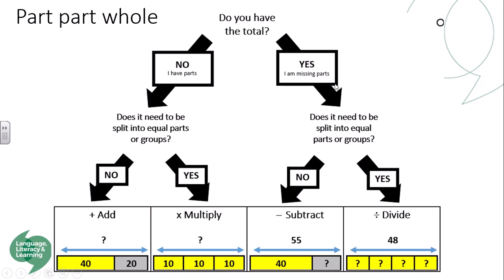That's where this flowchart comes in handy. When you get a question, ask: do I have the total? If yes, you must be missing parts. Then ask yourself: does it need to be split into equal parts or groups? If yes, that would be a division problem — you have the total, you know it needs to be split equally, you just don't know how many is in each group. If not, you have the total, you have one part, and you need to work out the missing part — for example, 55 take away 40. This is a really good visual cue to select the correct operation.